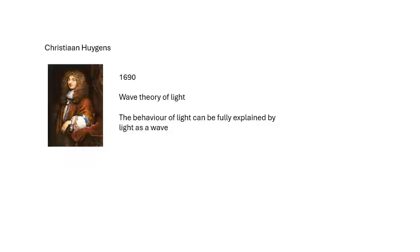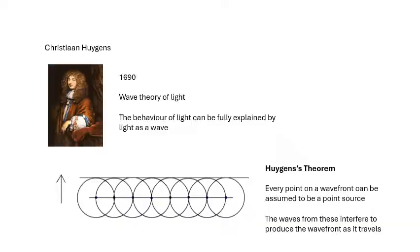...and refraction and diffraction, stuff that light does, can be explained by light as a wave, like water waves in a ripple tank. Christiaan Huygens, there's something called Huygens' theorem which basically says that every point on a wavefront you can assume to be a point source, and then all of these wavelets from all of these point sources interfere and add together to produce the next plane wavefront.